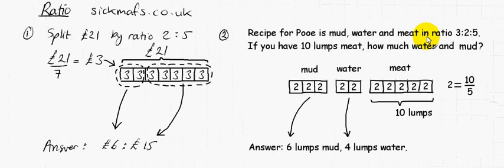And to work out the mud, which is equal to 3 parts, I have to do 3 times 2 lumps, which gives you 6 lumps of mud, and that's it really. That's how you do your ratio.